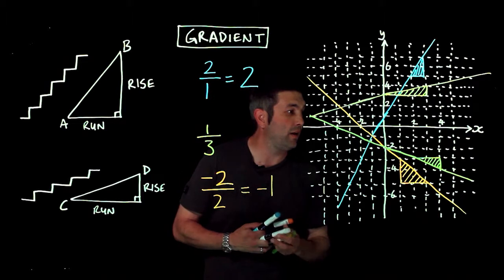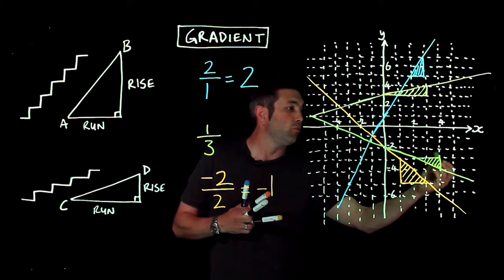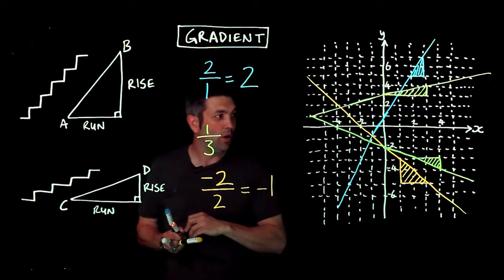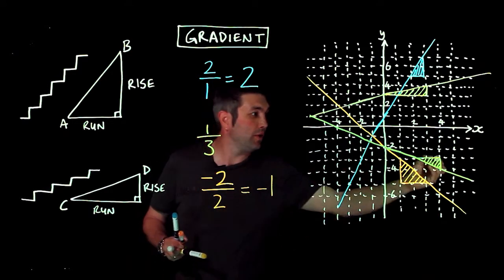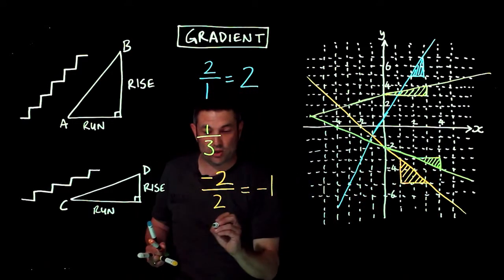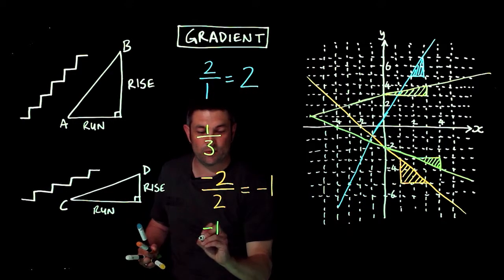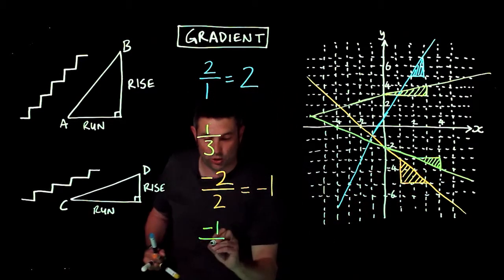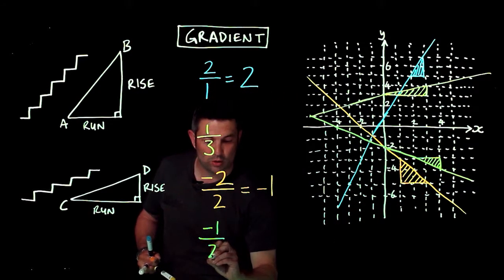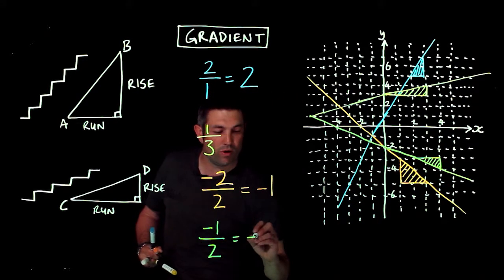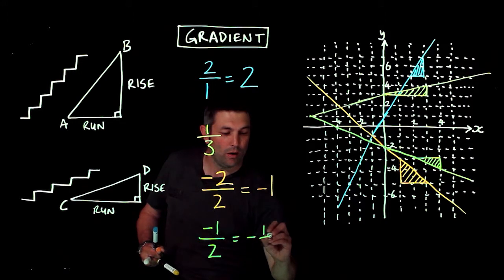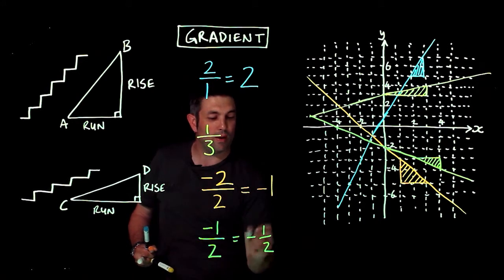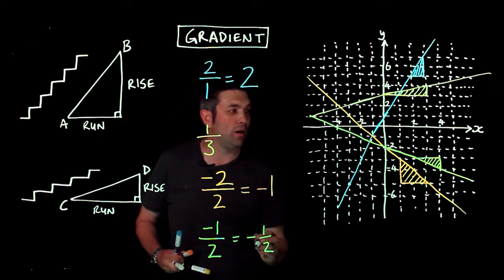For the green line, once again the rise is going down — it's a drop. I've gone down one, so the rise is negative one, and I've gone along two. The gradient of the green line is minus a half.